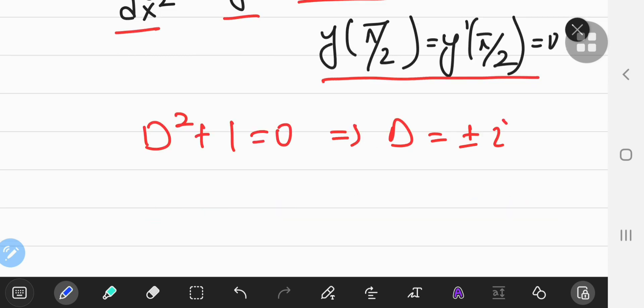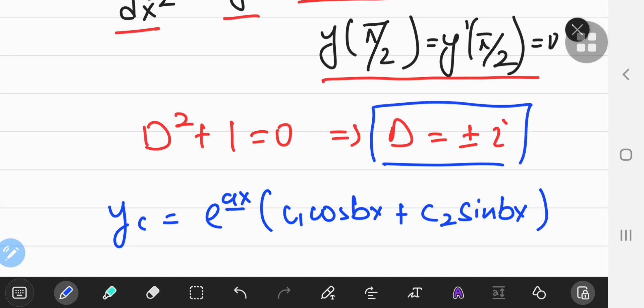We know that in the case of imaginary solutions to the characteristic equation, the characteristic solution y sub c can be written as e to the ax times some constant c1 times cos bx plus another constant c2 times sine bx, where a is the real part of the solution. We see that the real parts of the solutions are 0, and b here is the modulus of the imaginary part. The modulus of iota is 1.